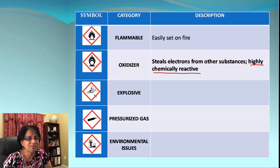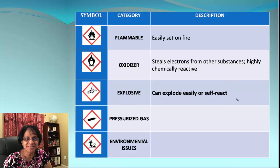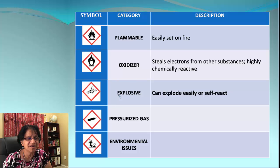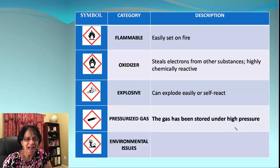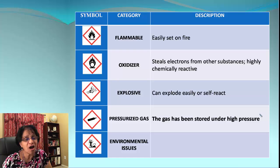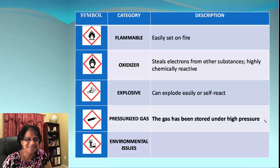Explosive — look at that firework in the GHS symbol. An explosive substance can explode easily and can even self-react on its own. Next is pressurized gas, shown as a cylinder with gas — that's the symbol. Gas is stored in cylinders under high pressure, so we have to be careful not to bring it close to any hot surfaces, and just be generally careful with pressurized gas.